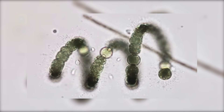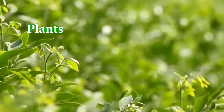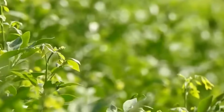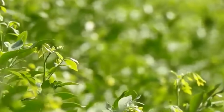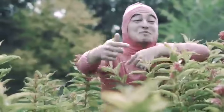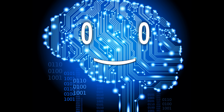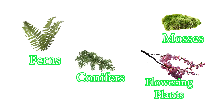Eventually, some protists which were able to turn sunlight into energy evolved into plants — multicellular organisms that are able to photosynthesize. I'm sure you've seen a plant at least once in your life. If not, you probably haven't evolved eyes yet. All in all, plants are pretty boring — their classification includes ferns, mosses, conifers, and flowering plants.